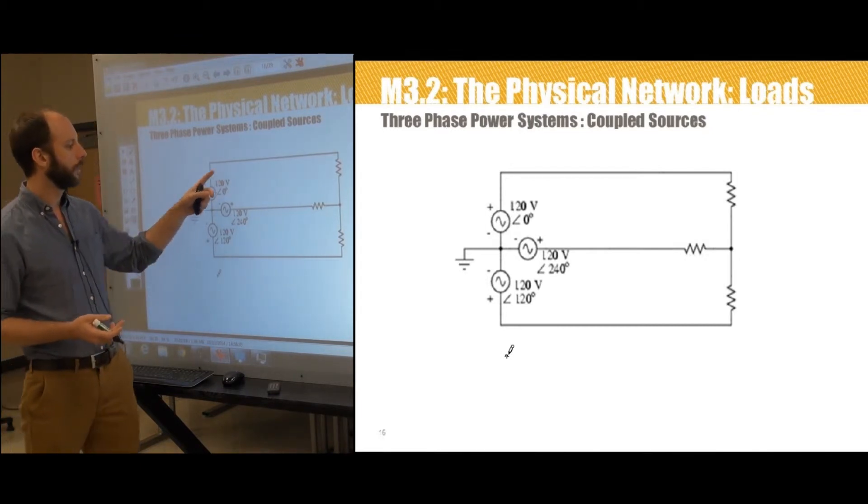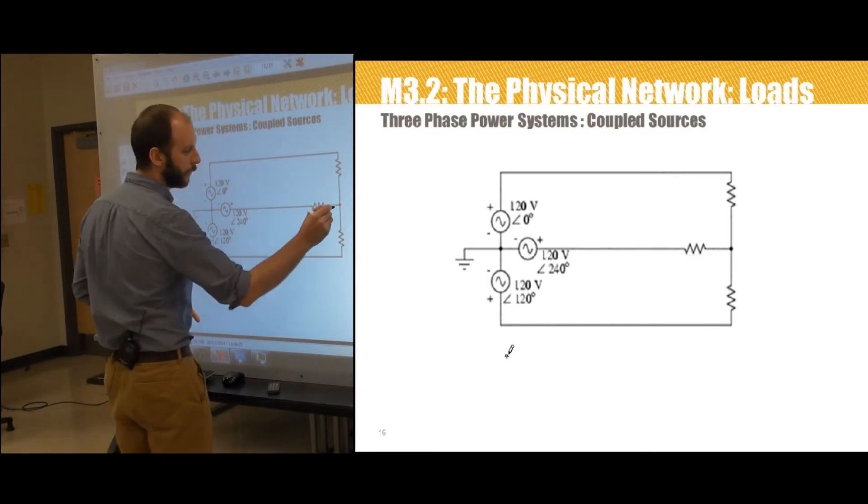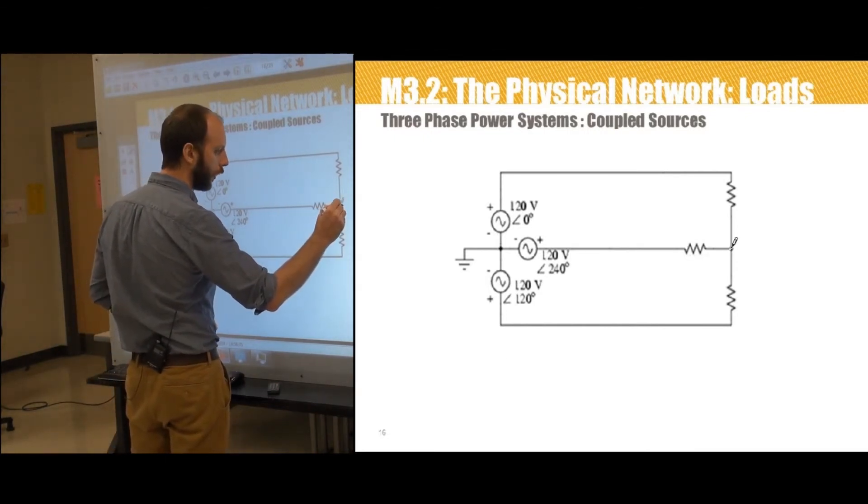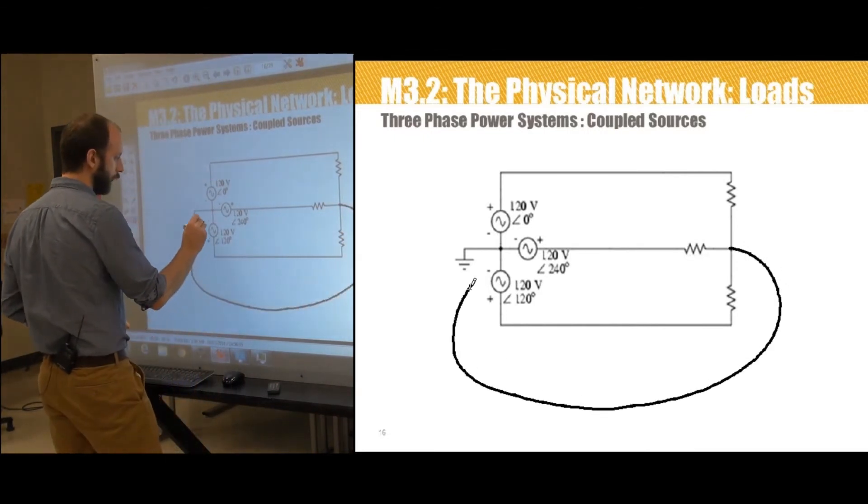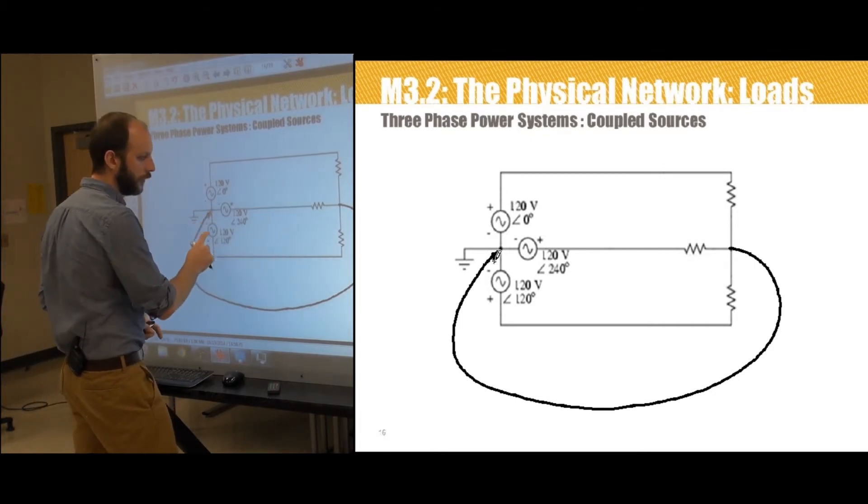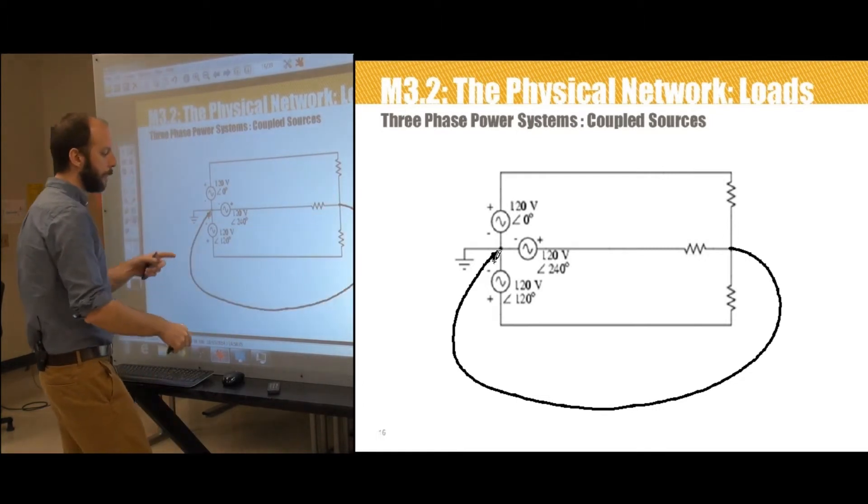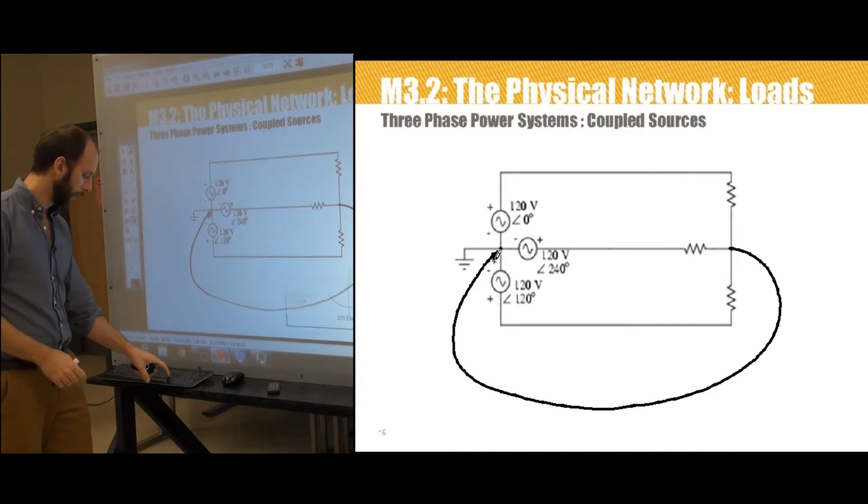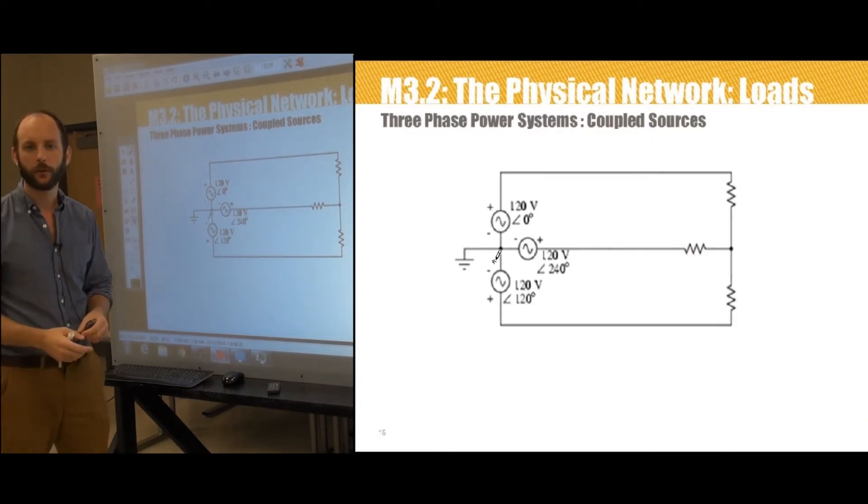Which is the same circuit that we presented earlier, we've got 120, that would be ZA, and then this is, there would be like a neutral wire here. This would be ZA, this would be ZB, this would be ZC, but no current flows in this wire, so it can just be eliminated. And so we do that, and we end up with that circuit.